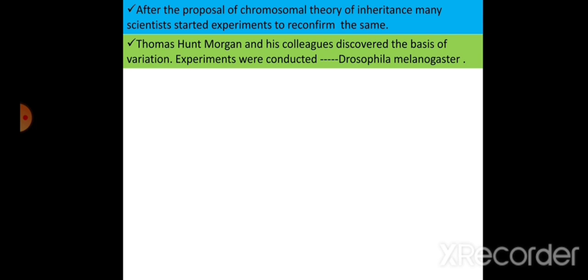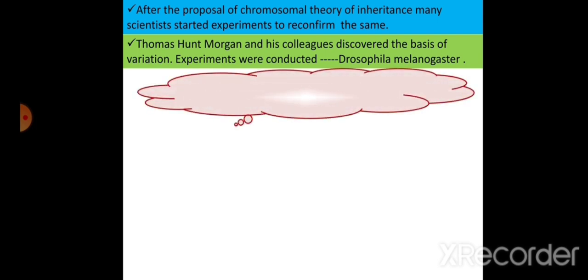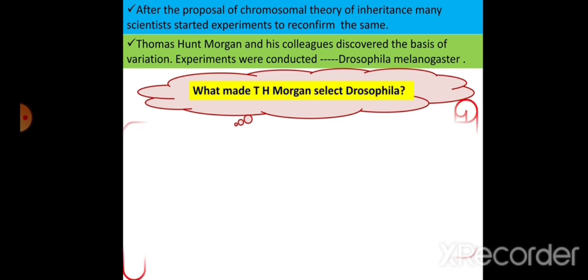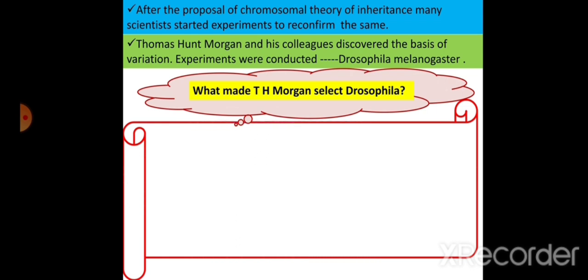Drosophila melanogaster is a common fruit fly and it is called the Cinderella of genetics. Now, a question for three marks can be asked: what made Thomas Hunt Morgan select Drosophila? The reasons are as follows.